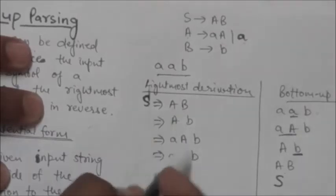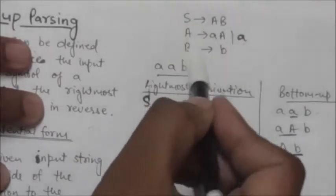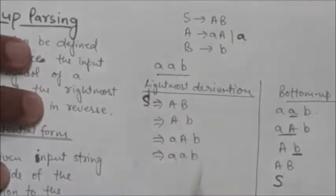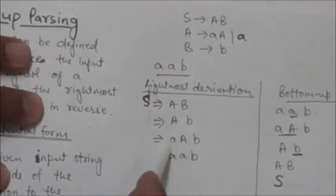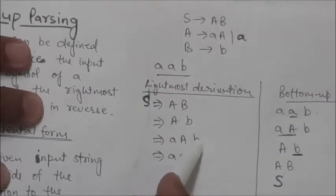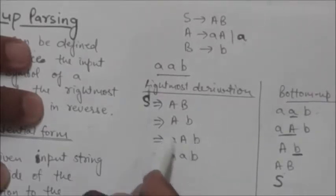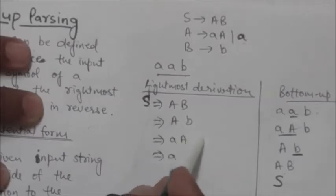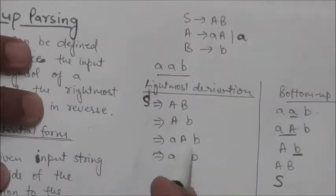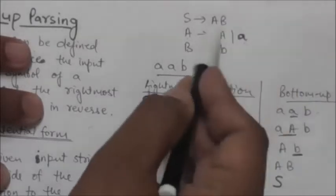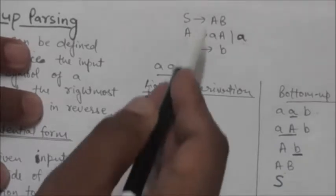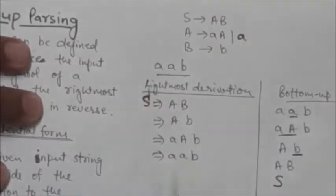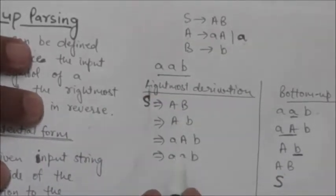In the string ab, the rightmost non-terminal is A, so we apply the production rule A → aA. This A is replaced by aA, giving us the string aAb. Then the rightmost non-terminal is again A, so we apply A → a. This A is replaced by a, and we get the final string aab.